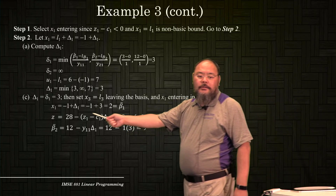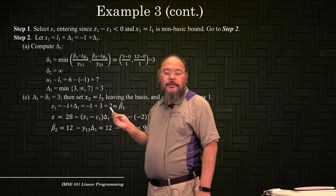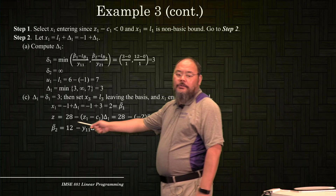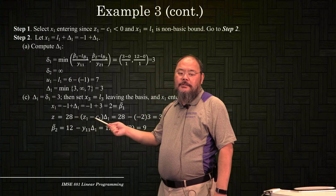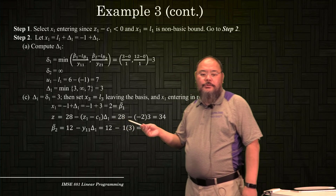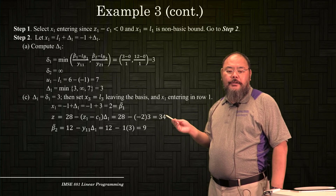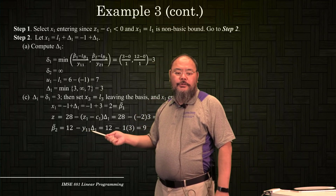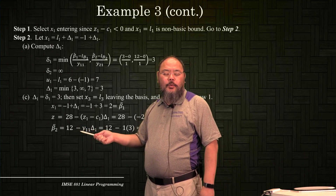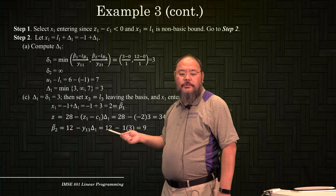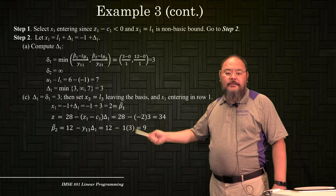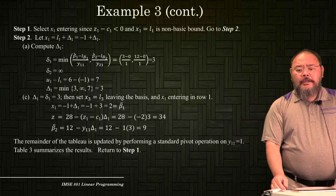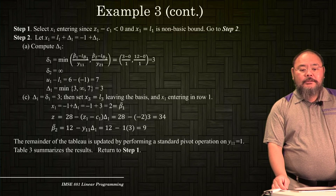x1 moves from -1 plus 3, becoming positive 2, which matches beta1, the right-hand side. The objective function value moves from 20 minus z1 minus c1 times delta1: 20 minus (-2) times 3 equals 28 plus 6 equals 34, increasing the objective. The updated beta2, which is x4, equals 12 minus y11 times delta1: 12 minus 1 times 3 equals 9. We then perform a basis update and proceed to the next tableau.